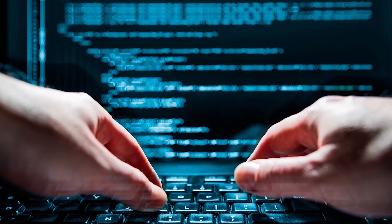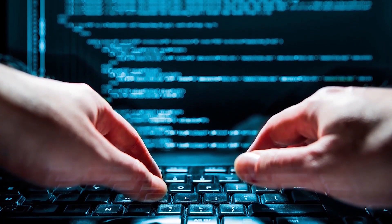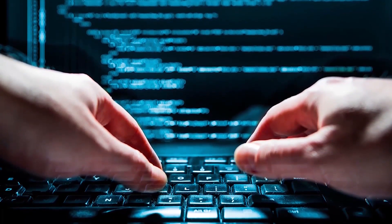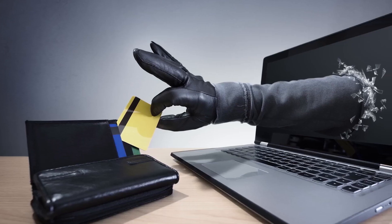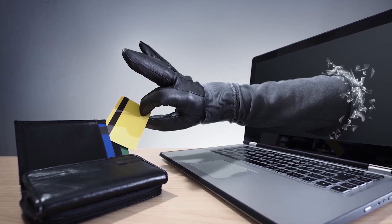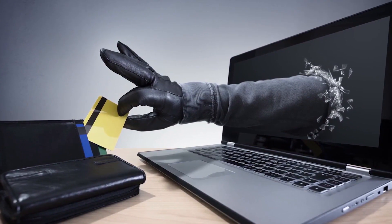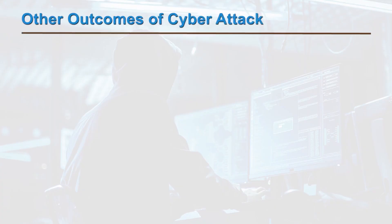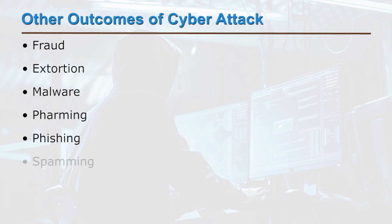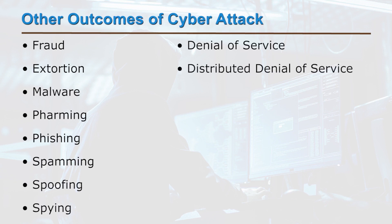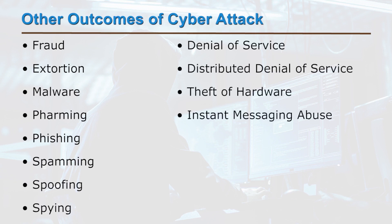How are cyber attacks executed? In order to execute a cyber attack, malicious code or logic is used to alter the actual code or data. This results in compromised data, which leads to cyber crimes such as information and identity theft, and other outcomes such as fraud, extortion, malware, pharming, phishing, spamming, spoofing, spying, denial of service, distributed denial of service, theft of hardware, instant messaging abuse, and intellectual property theft.